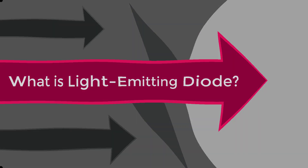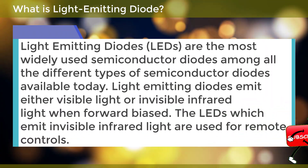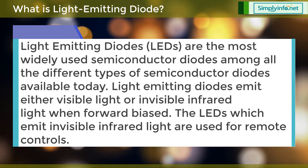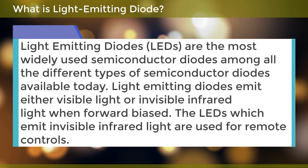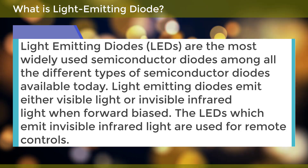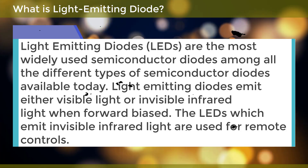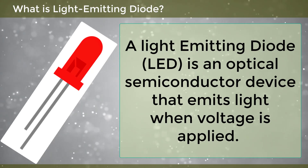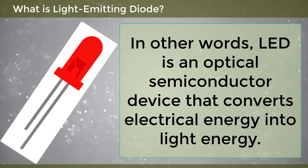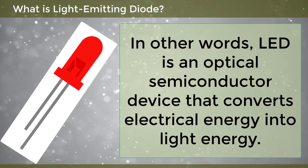Light Emitting Diodes are the most widely used semiconductor diodes among all the different types of semiconductor diodes available today. They emit either visible light or invisible infrared light when forward biased. LEDs which emit invisible infrared light are used for remote controls. A Light Emitting Diode is an optical semiconductor device that converts electrical energy into light energy.